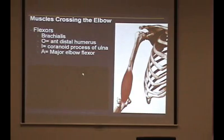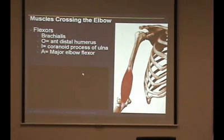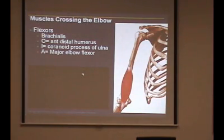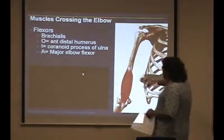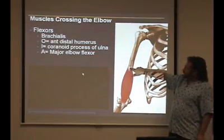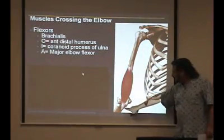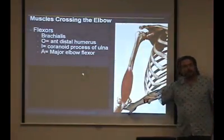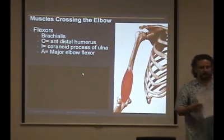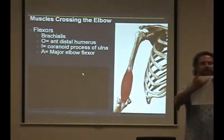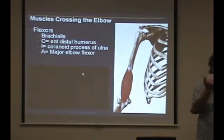Take one of the handouts here and make sure you put it on the side that says anterior. There's a space where you can put the name of the muscle — it's brachialis. It's going to come off the anterior portion of the distal humerus, and make sure you understand it's going to go to the ulna — specifically the proximal ulna.